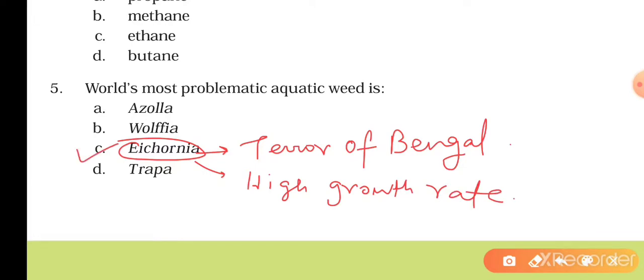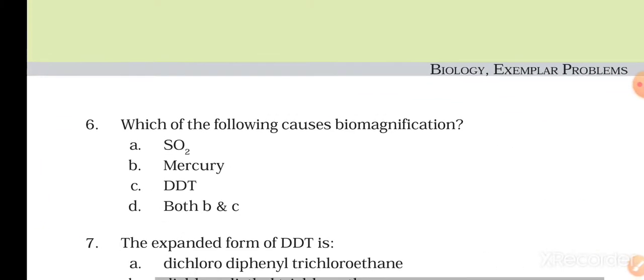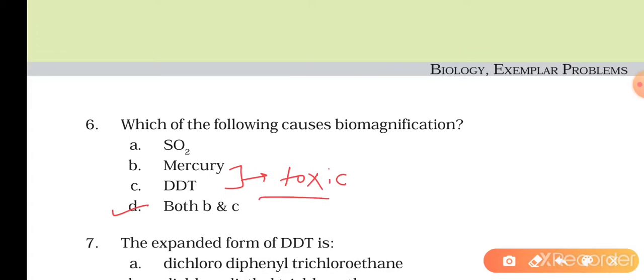Coming to the next question, the sixth question is: which of the following causes biomagnification? The right answer will be D, both B and C, as mercury and DDT both are toxic and they accumulate in successive trophic levels.